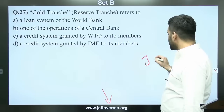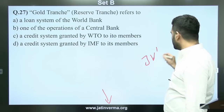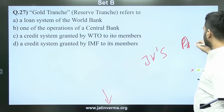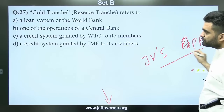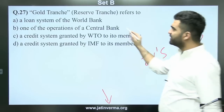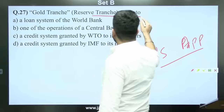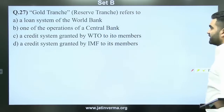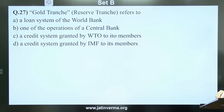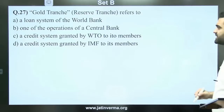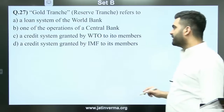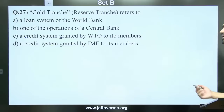Question 27: Gold tranche reserve tranche refers to: a loan system of the World Bank, one of the operations of the central bank, a credit system granted by WTO to its members, or a credit system granted by IMF to its members. The answer is D — it is the amount of gold that each member country of IMF contributes as part of its membership obligation. This was a purely factual question.